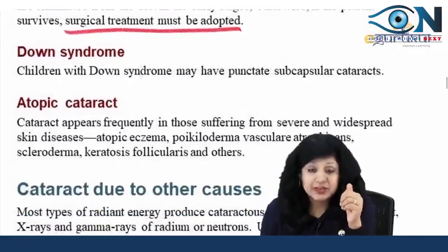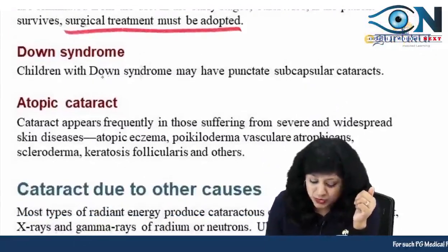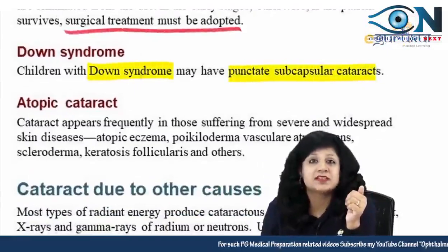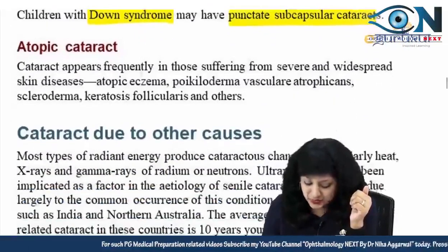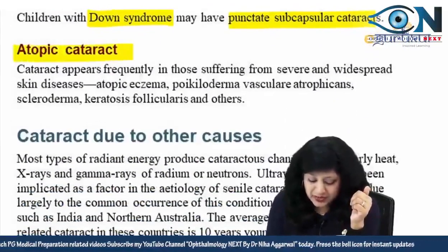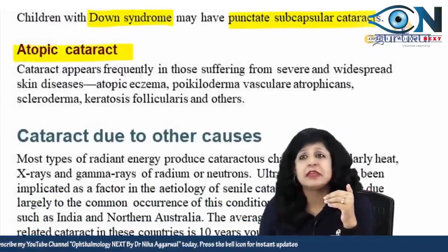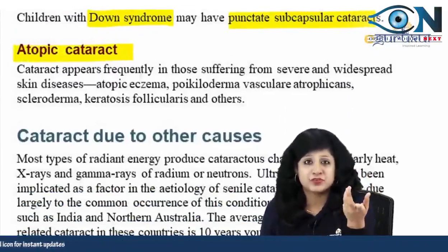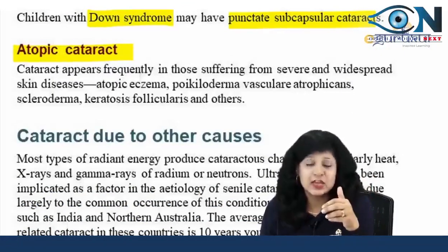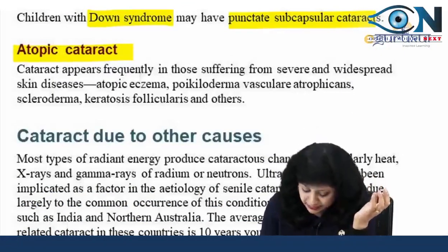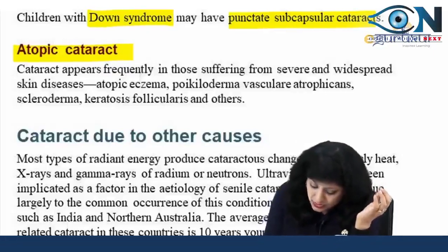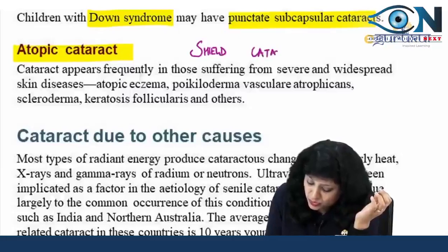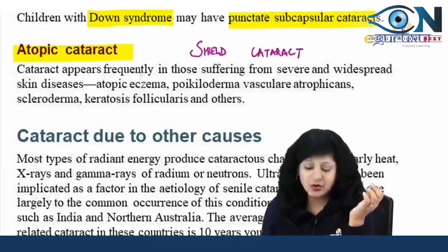Other syndromes include Down syndrome, where children have punctate opacities. Patients with atopic dermatitis can also develop cataracts — this is called the shield cataract or atopic cataract.